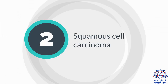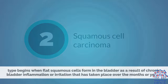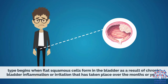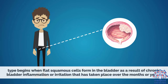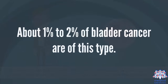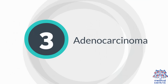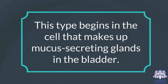Squamous cell carcinoma. This type begins when flat squamous cells form in the bladder as a result of chronic bladder inflammation or irritation that has taken place over months or years. About 1% to 2% of bladder cancers are of this type. Adenocarcinoma. This type begins in the cells that make up mucus-secreting glands in the bladder.